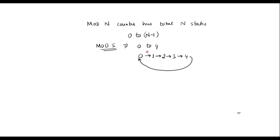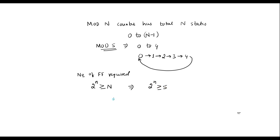Now let's see how many flip-flops are required to design the mod 5 counter. The number of flip-flops required is calculated as 2 to the power n must be greater than or equal to N, where N is 5 and small n is the number of flip-flops. If n equals 1, we get 2 — not sufficient. If n equals 2, we get 4 — still not sufficient. If n equals 3, we get 8, which satisfies the condition. Therefore, 3 flip-flops are required.